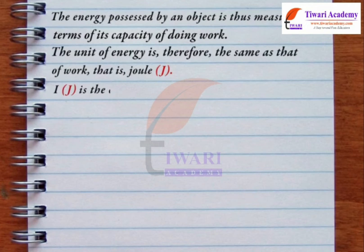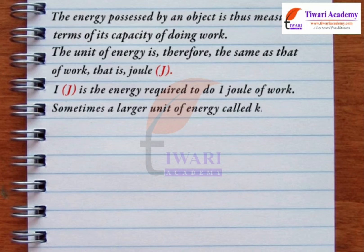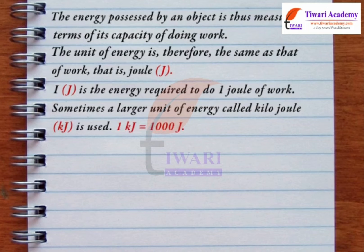1 J is the energy required to do 1 joule of work. Sometimes a larger unit of energy called kilojoule (kJ) is used. 1 kilojoule equals 1000 joules.